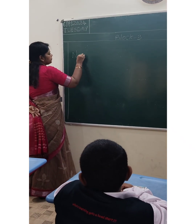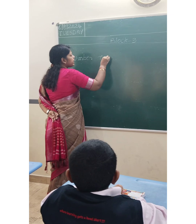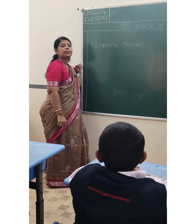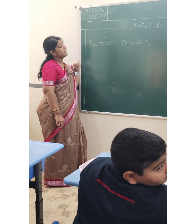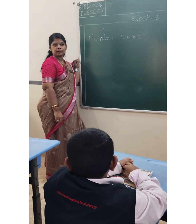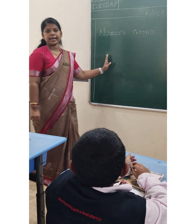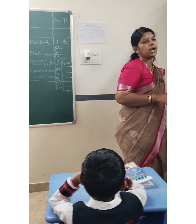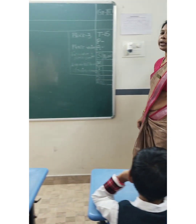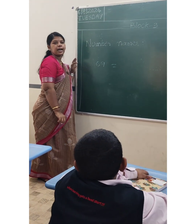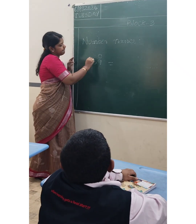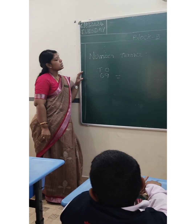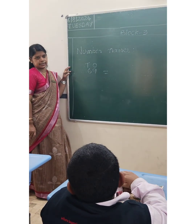Next — number names. Do you all know number names? Yes. We have writing words and writing figures. Writing figures means they give the number name and you write the number. Writing words means they give the number and you write the number name. Now tell me — nine is at which place? One's place. Six is at ten's place. So the number is sixty-nine.